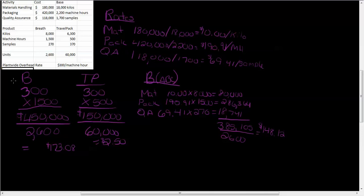Notice how that compares: under traditional costing Breath was $173.08, and under activity-based costing it's $148.12. The difference comes from how we allocate costs. Under ABC we're only using machine hours for packaging. For samples, Breath uses fewer samples than Travel Pack, and for kilos the split is closer. For machine hours, Breath is using 75% and Travel Pack only 25%.